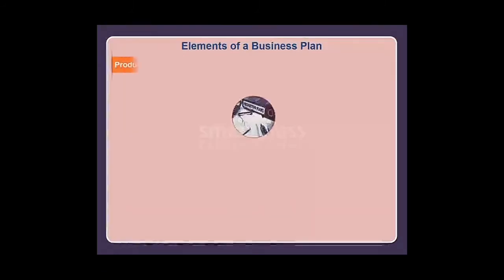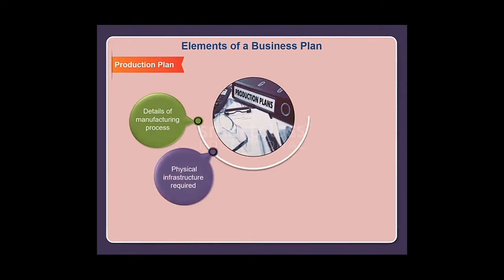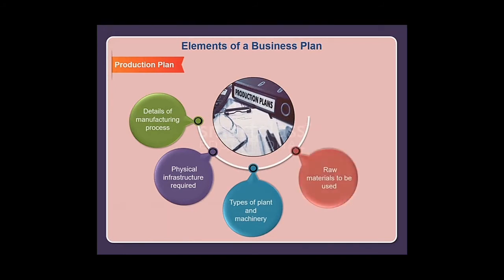The production plan covers details of the manufacturing process, physical infrastructure required, types of plant and machinery, raw materials to be used, and the requirement of power and water.